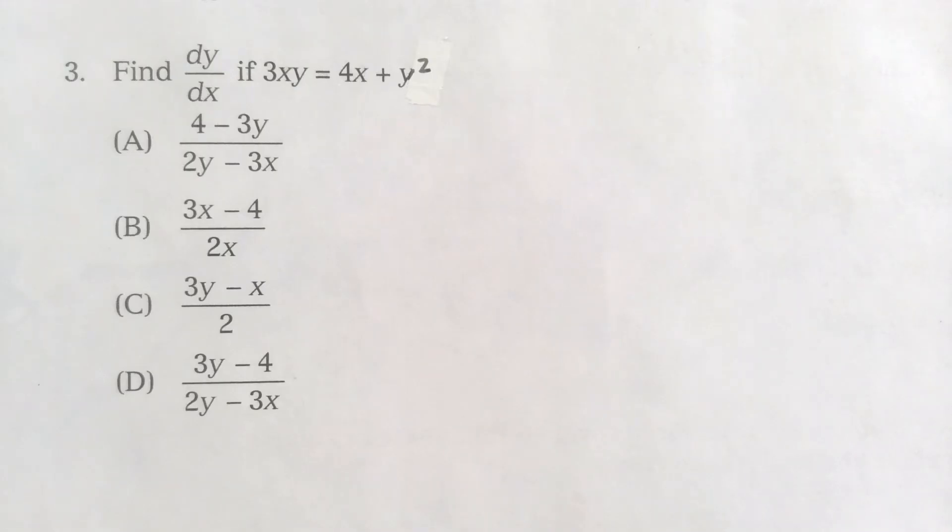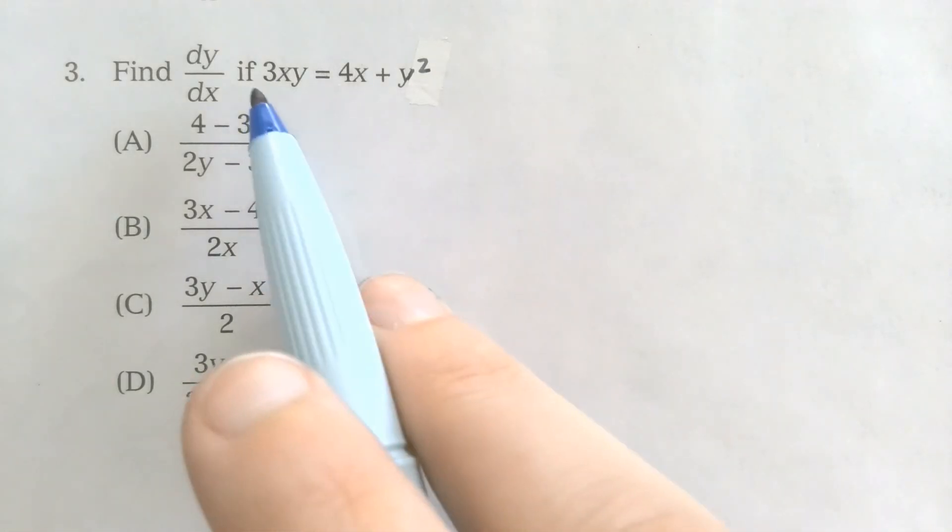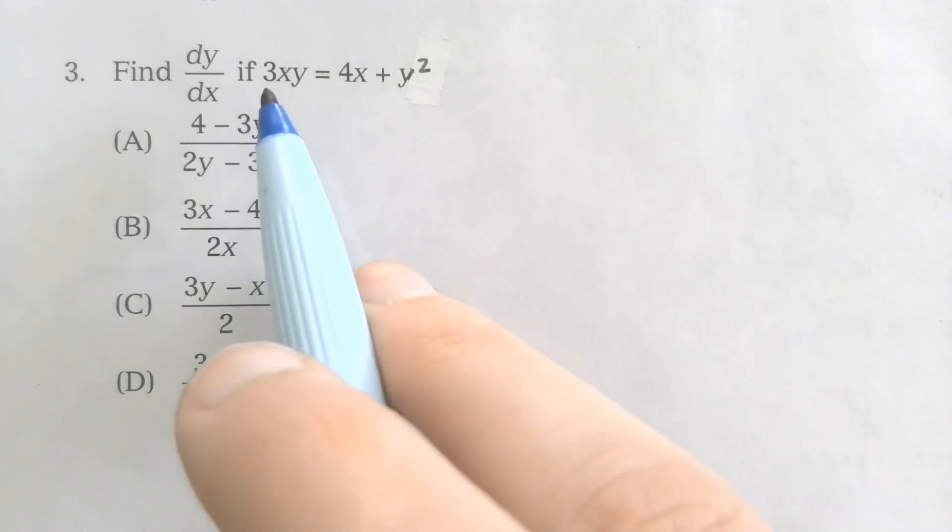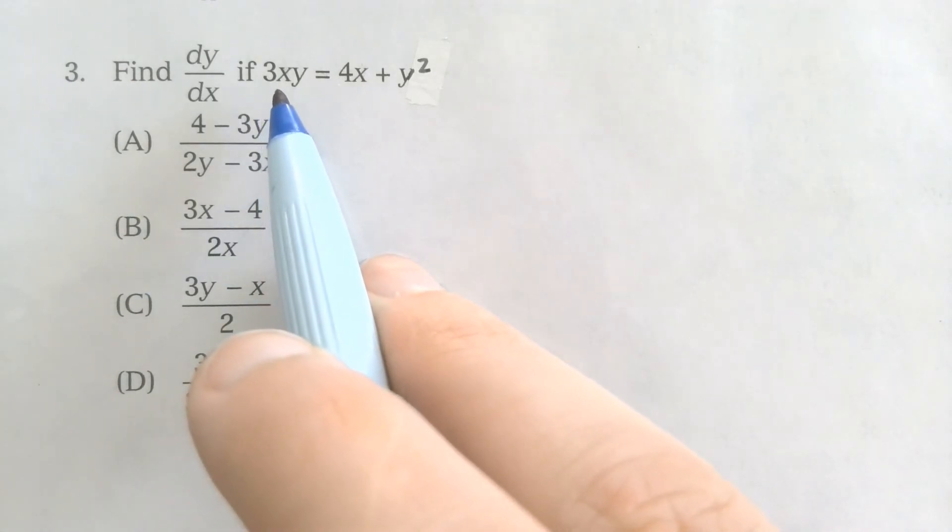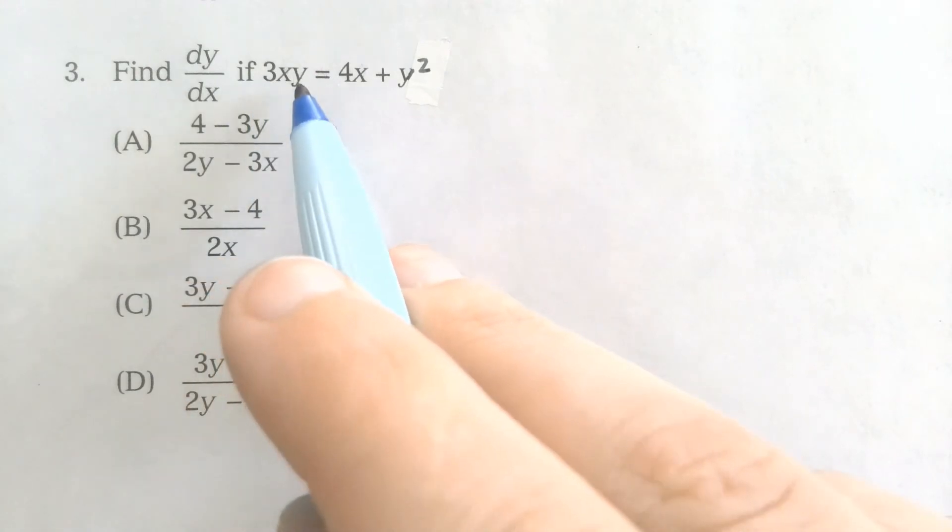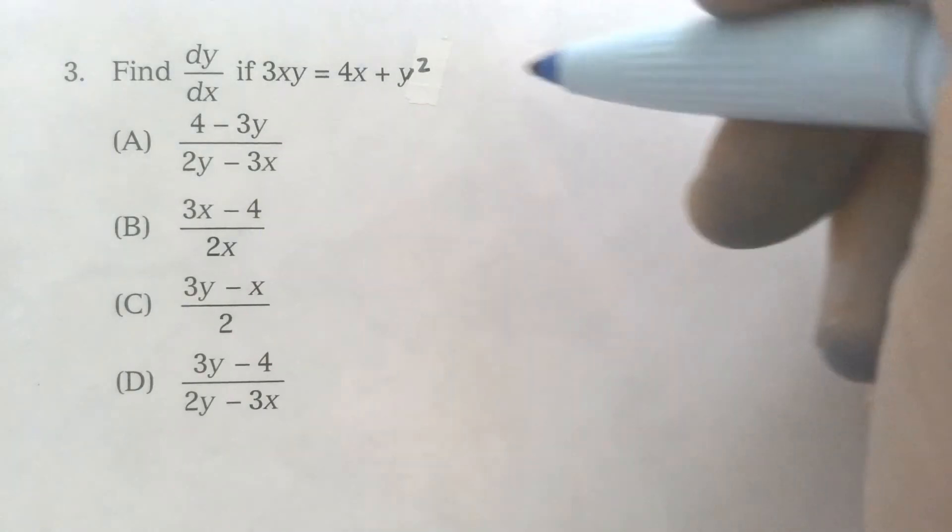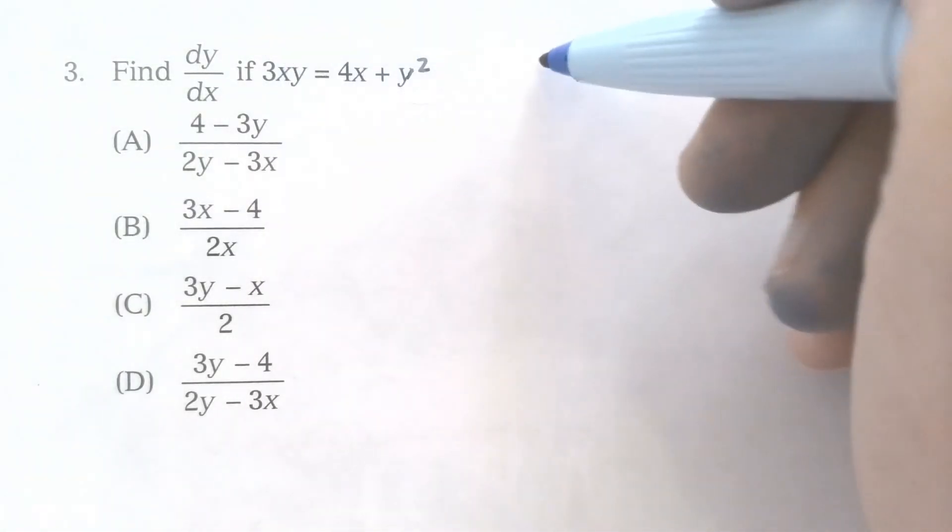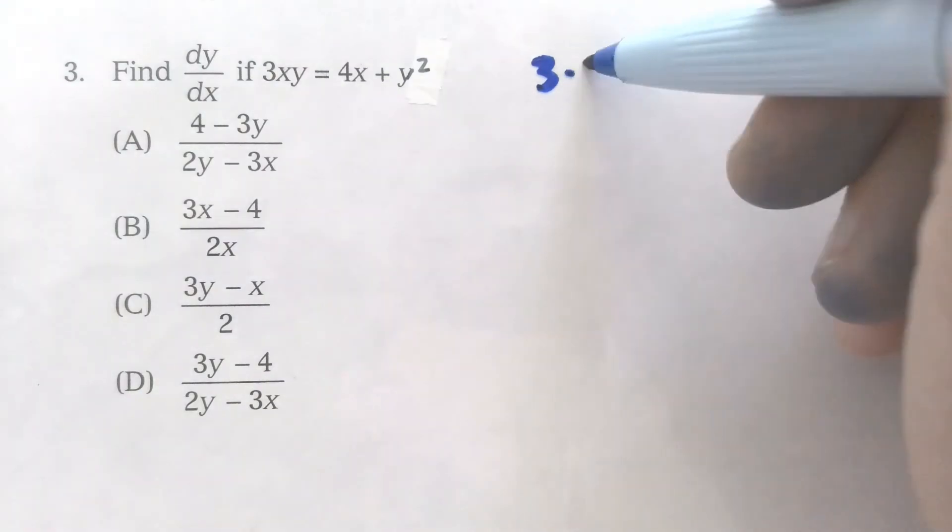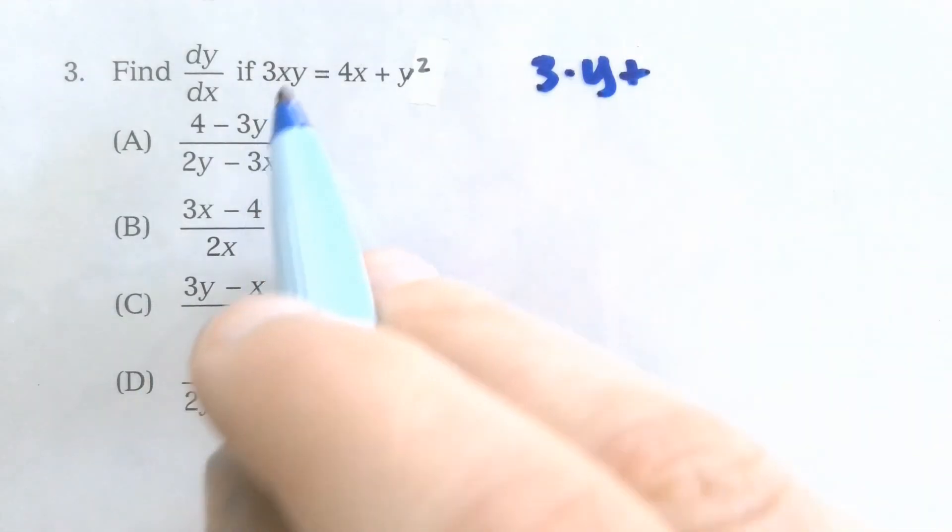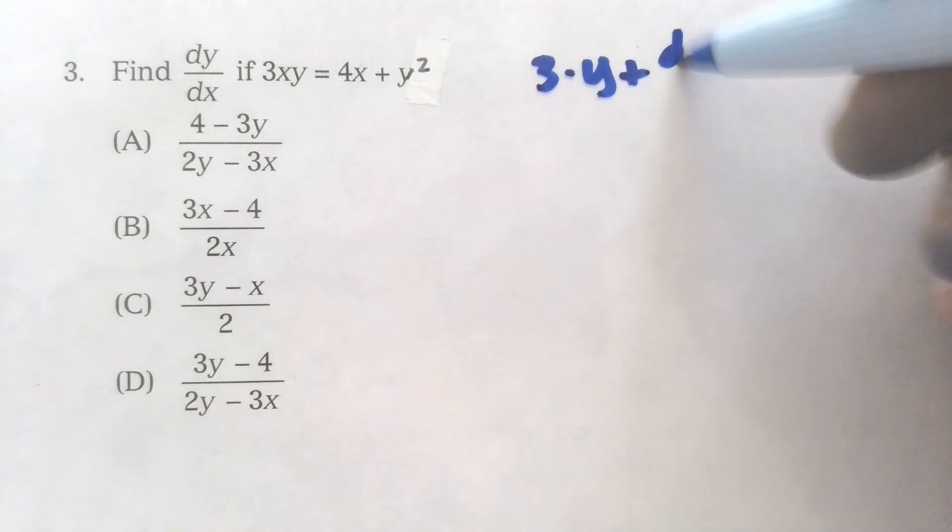The last thing that I want to cover today is implicit differentiation. And remember that that happens when we're taking the derivative of something that has x's and y's mixed into it. So here's what we're trying to take the derivative of. On the left side, when I take the derivative, I have to use the product rule because I have 3x times y, so I'll have my derivative of 3x is 3 times y plus the derivative of y is dy dx times 3x.